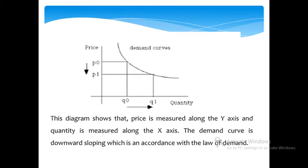This diagram shows the demand curve. It illustrates the inverse relationship between commodity price and quantity of commodities. Price is measured along the Y-axis and quantity is measured along the X-axis. The demand curve is downward sloping, which is in accordance with the law of demand.